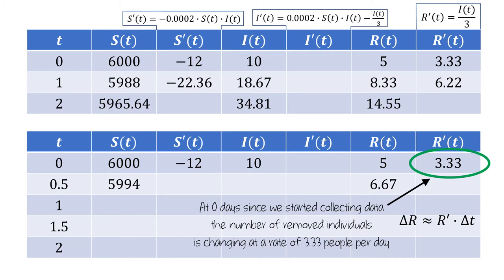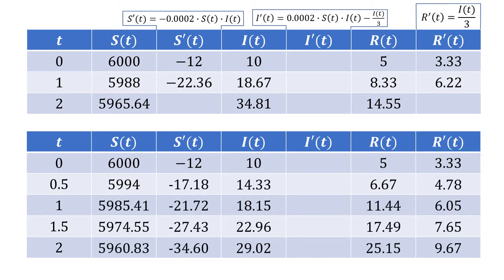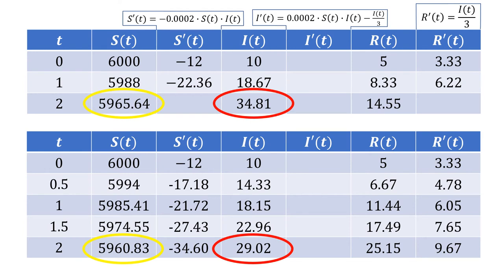Now I'm going to use a spreadsheet to automatically compute the rest of the values in this table. If we compare the two predictions for the number of susceptible individuals, we can see that the prediction we made using half day intervals was different than with the one day intervals. Comparing the number of infected individuals shows different predictions, as does comparing the predictions for the number of removed individuals.